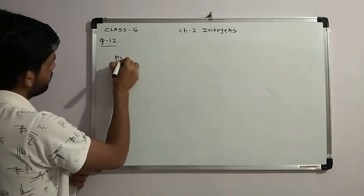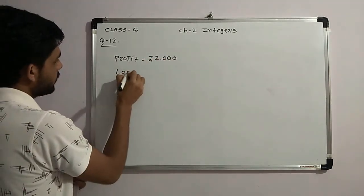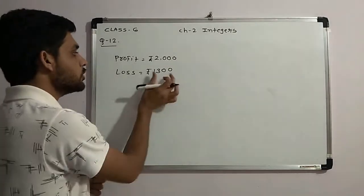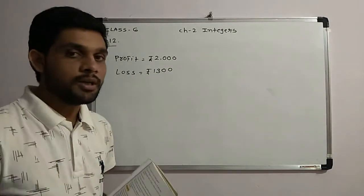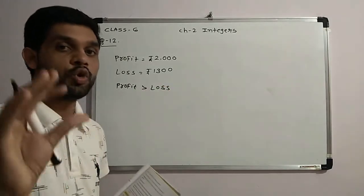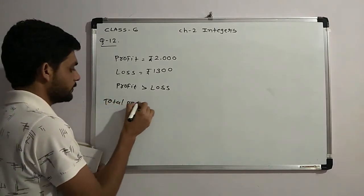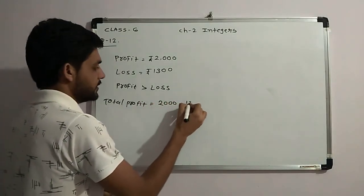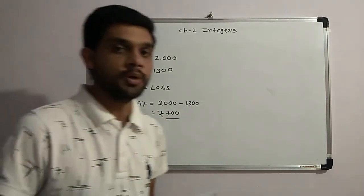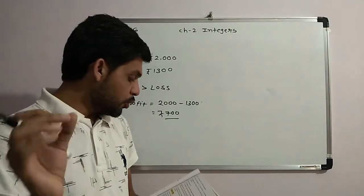First of all, the profit in one month is Rs. 2000. The loss in another month is Rs. 1300. So the total result is 2000 minus 1300, which equals Rs. 700. After two months, the total profit is Rs. 700. Let me move on to question number 13.